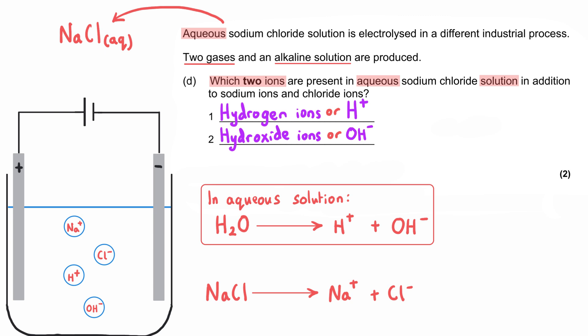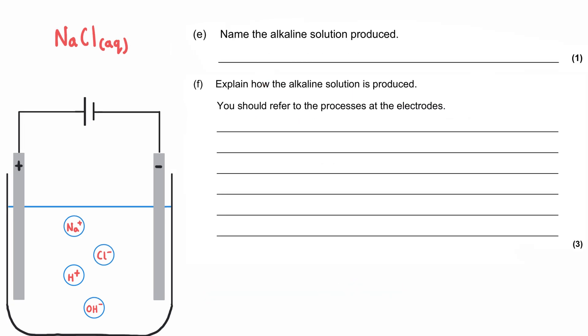Name the alkaline solution produced. Alkaline solutions typically contain the hydroxide ion, so it's likely this solution will be something to do with the hydroxide. But actually, part F asks us to explain how the alkaline solution is produced, referring to the processes taking place at the electrodes. So let's answer this question first, and then go back to E.